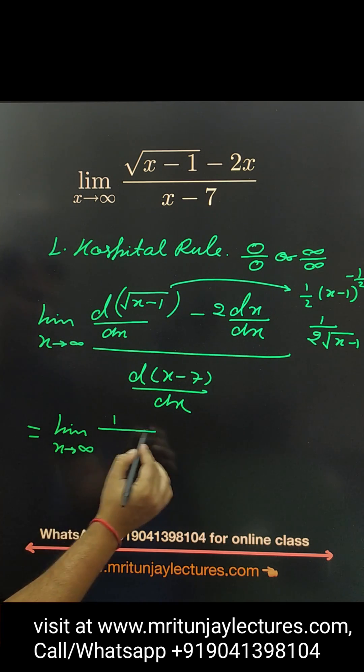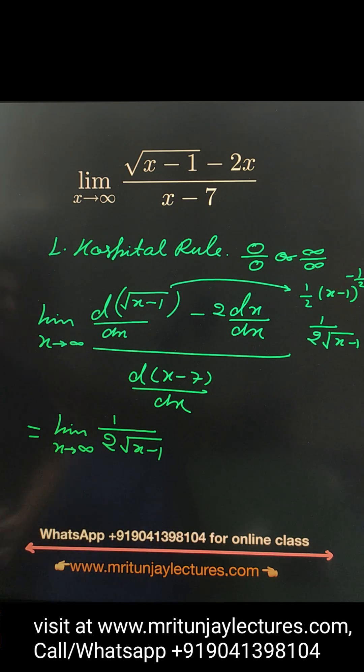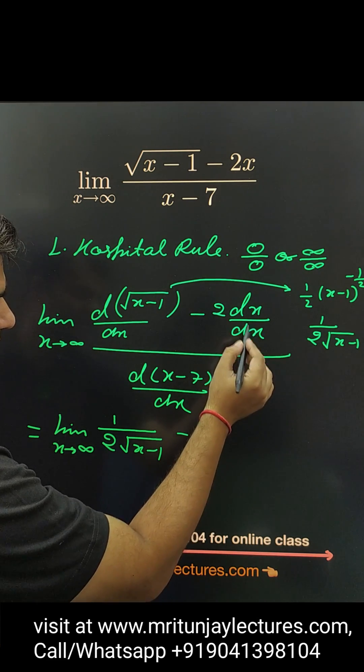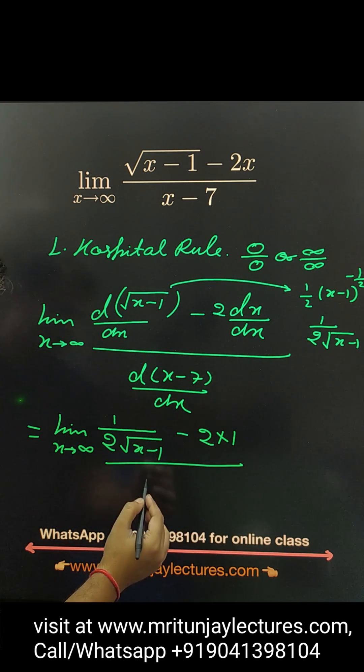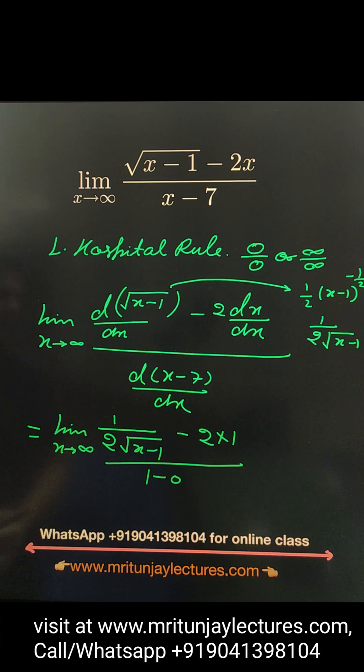That value 1 upon 2 under root x minus 1. Minus 2, differentiate dx by dx is 1. So, divided by 1 minus 0.